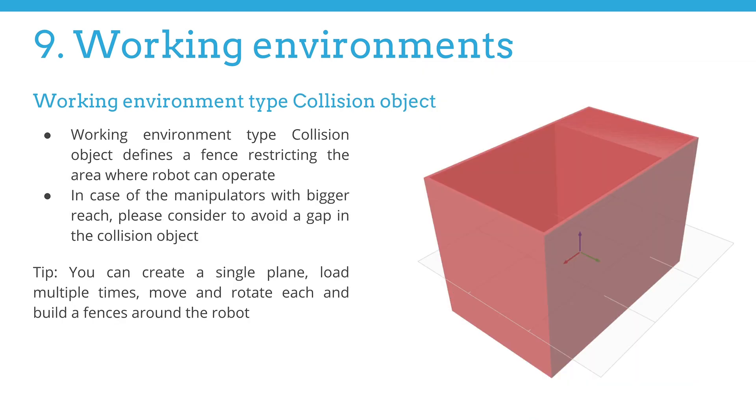The last working environment type is collision object, which defines the fence restricting area where the robot can operate. In the case of manipulators with a larger reach, please consider avoiding a gap in the collision object. Multiple instances of this type are allowed. So you can create a single plane, load more times, move and rotate each, and build a fence around the robot.